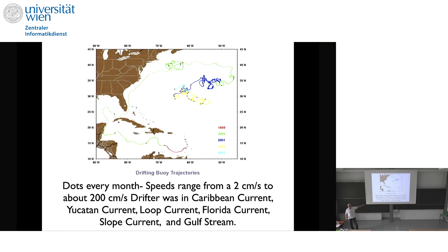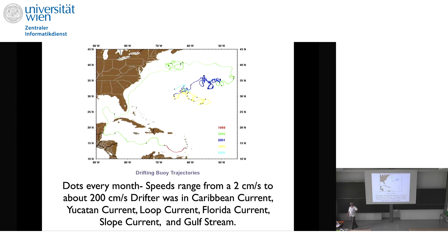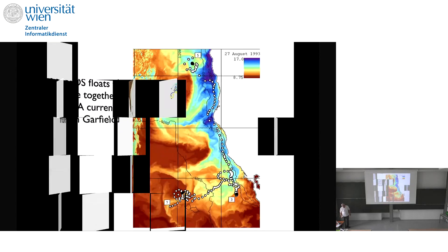Here's another drifter where we really got our money's worth — it lasted almost four years. It was launched near the islands, then in the Caribbean Current, then the very tight flow against the coast in the Yucatan Current. Here's a nice example of the Loop Current, then the Gulf Stream. It gets kicked out, the Gulf Stream meanders, and then the surface drifter gets caught in the subtropical gyre — visiting all these different currents for us.